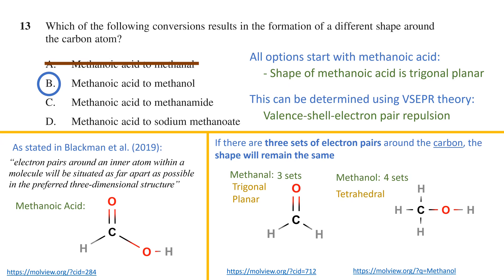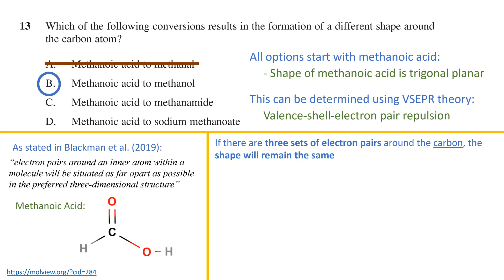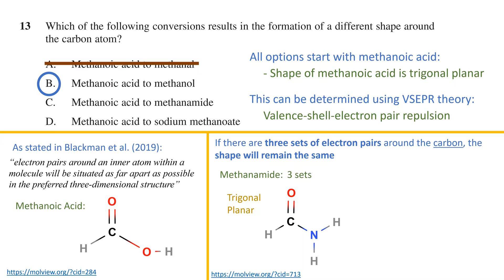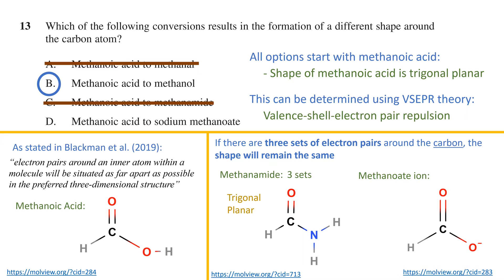We can eliminate the other options to be sure. In option C, methanamide replaces the OH with NH2. Yet again we only have three electron pair sets around the carbon, so the shape will be trigonal planar, eliminating option C. Lastly, the conversion to the methanoate ion produces an ion where a proton has been lost off the OH group. We still have three sets of electron pairs around the carbon, and the structure remains trigonal planar, eliminating option D. Only option B remains as our answer.